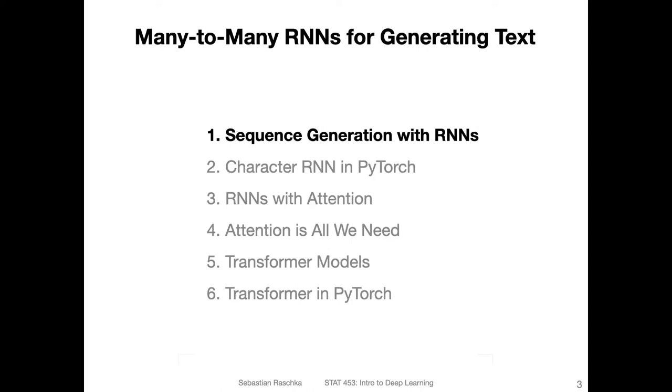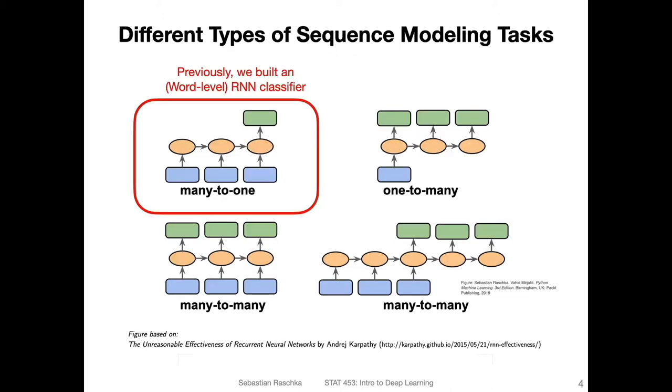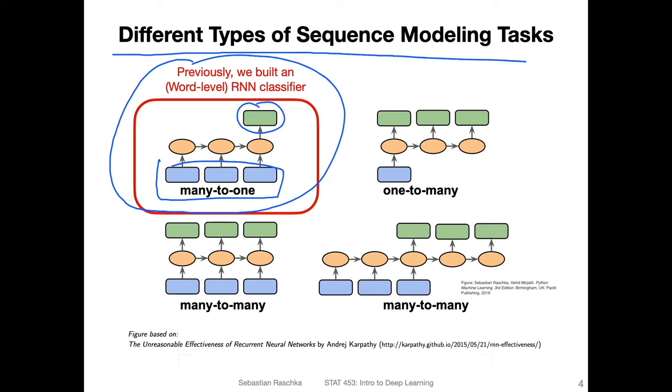All right, so in this video, let me illustrate the main big picture concepts behind using RNNs for sequence generation. In particular, we will be briefly talking about many-to-many RNNs for generating texts. So recall this figure here that I showed you a couple of weeks ago when we talked about recurrent neural networks for text classification. We had this slide on the different types of sequence modeling tasks. Previously, we used this many-to-one approach, where we had a text input, so many inputs, and had one output sentiment label whether the movie review was positive or negative. The classifier worked on a word level. We had an embedding vector that took each word as an input and was converting it into a continuous vector.